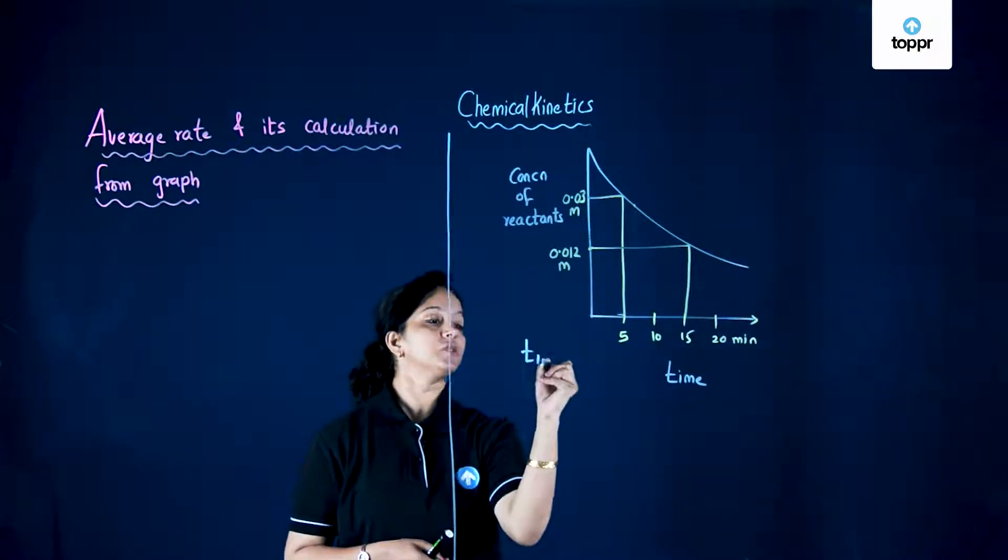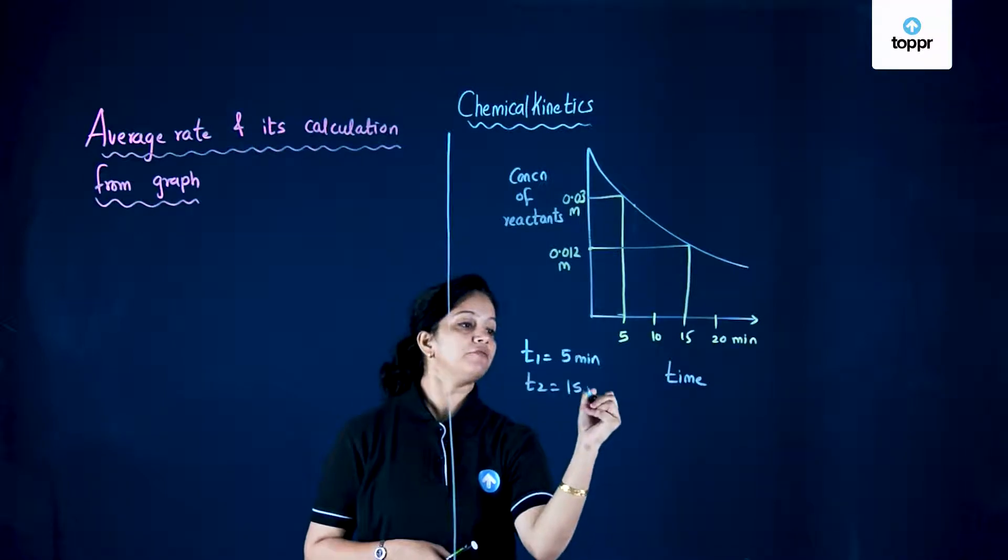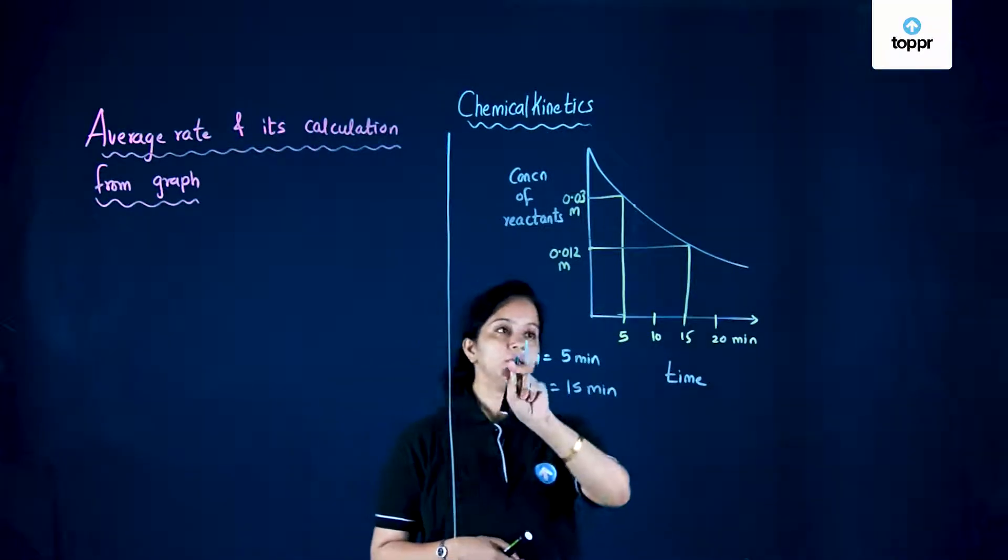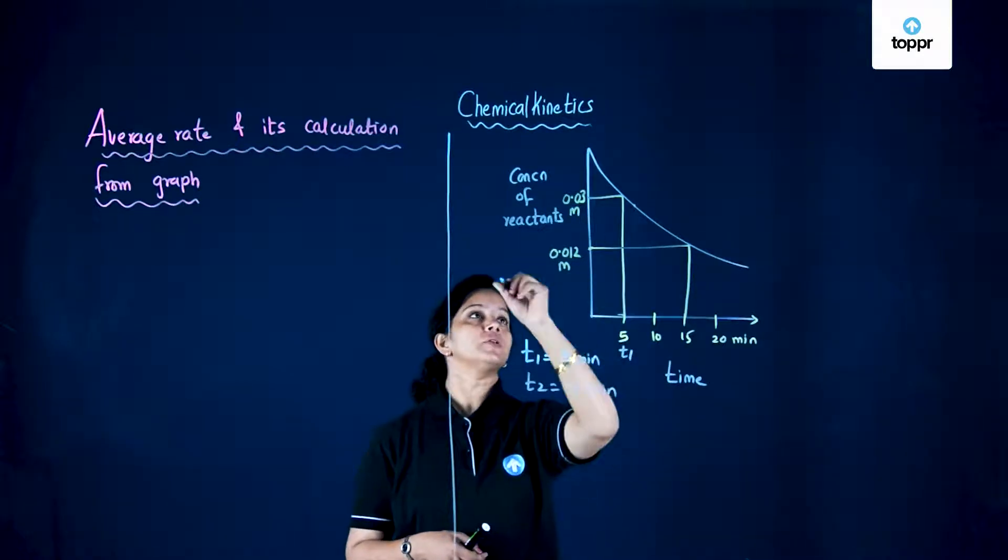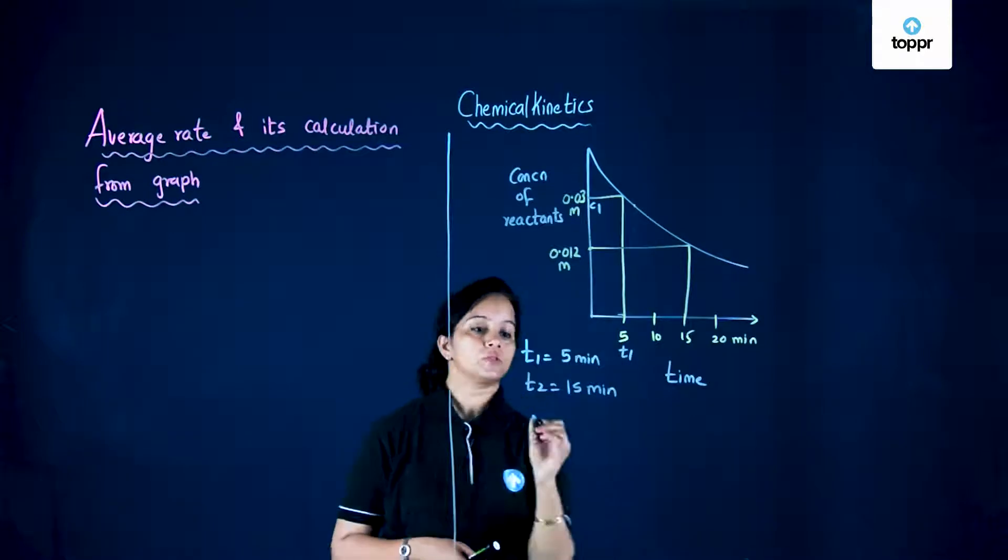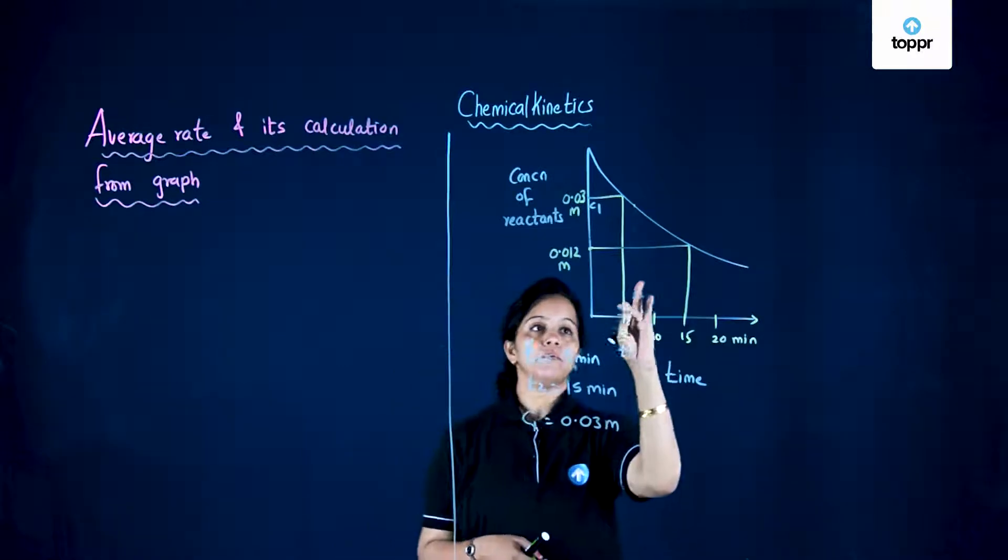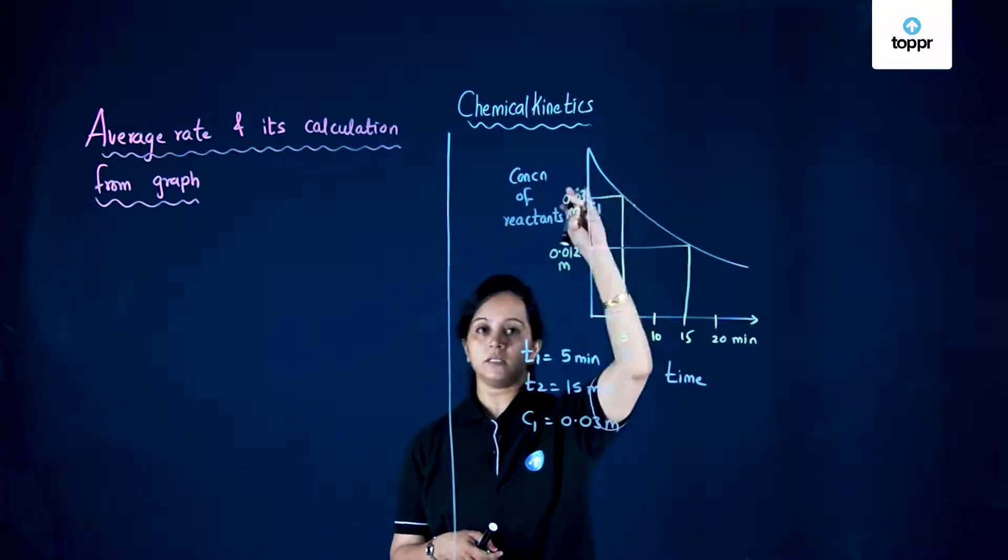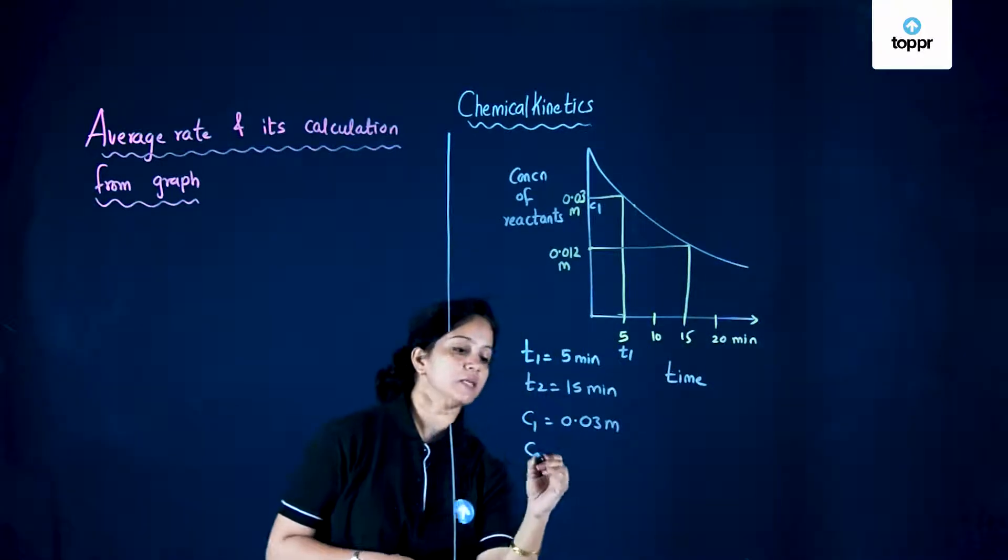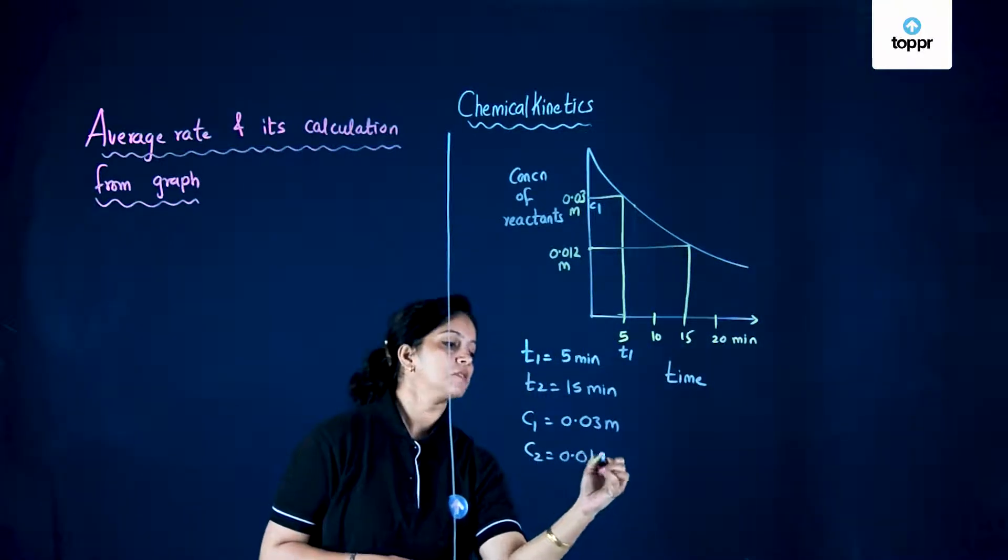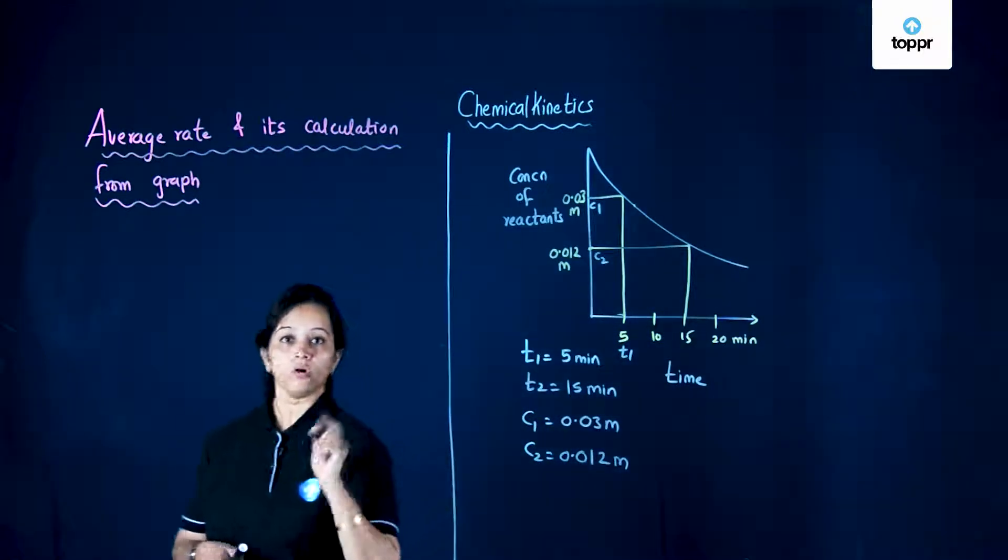So we say that our t1 is 5 minutes, t2 is 15 minutes. Similarly, at t1 the value is c1, so c1 is 0.03 molar. When time was 5th minute, the concentration was higher. As time increased, concentration dropped down and we are getting c2 is equal to 0.01 molar.